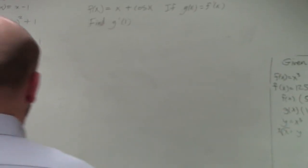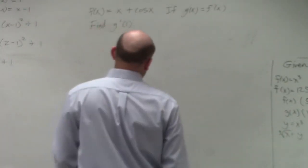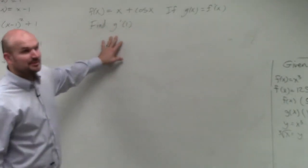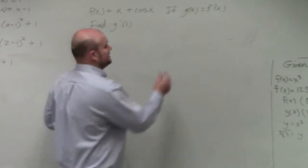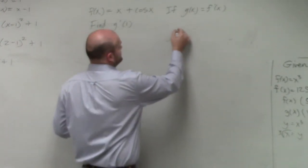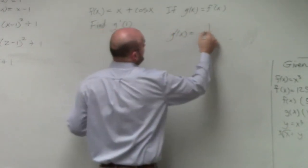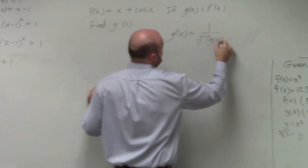Alright, so in this example, what we need to do is identify that to take the derivative, to find g prime of x, that's going to be 1 over f prime of g of x.